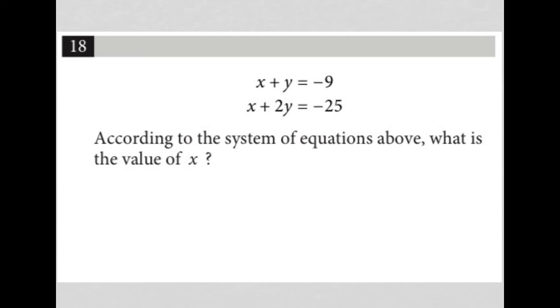Our last example is more typical. We have x + y = -9 and x + 2y = -25. The question asks: what is the value of x? We don't care about y, so if I use elimination, it makes sense to eliminate the y value. It wouldn't make sense to eliminate x because I'm solving for x—I want to keep x.